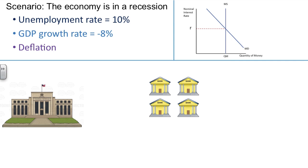The scenario presented to us is that our economy is in a recession. Characteristic of the recession, we have a very high unemployment rate, a negative growth rate in terms of GDP, and the economy is experiencing deflation. So what does the Federal Reserve do to improve the market conditions and work to get us out of this recession?